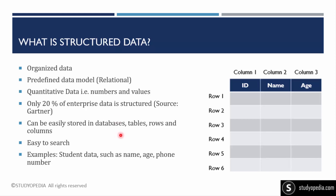Structured data can be stored in the form of database tables, rows, and columns. It is easy to search — for example, if I asked you to search for the name 'Amit' inside a dataset or table with a hundred rows, you could easily search for it.